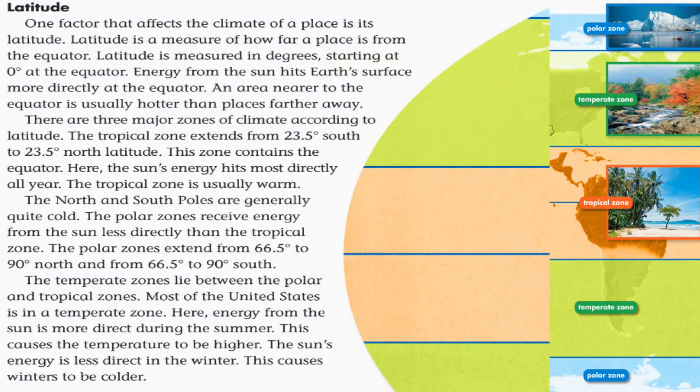Latitude is one factor that affects the climate of a place. Latitude is a measure of how far a place is from the equator, measured in degrees starting at zero at the equator. Energy from the sun hits earth's surfaces more directly at the equator, so an area closer to the equator is usually hotter than places that are farther away.